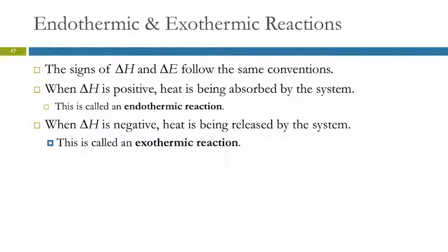So delta h and delta e follow the same sign conventions. If these are positive, heat is being absorbed. Like money coming into my wallet is a positive experience for me. If delta h or delta e are negative, then heat is being released. It's going out. So coming in, heat coming in is endothermic. It's going in. Exothermic, we've got the energy leaving. So endothermic and exothermic.